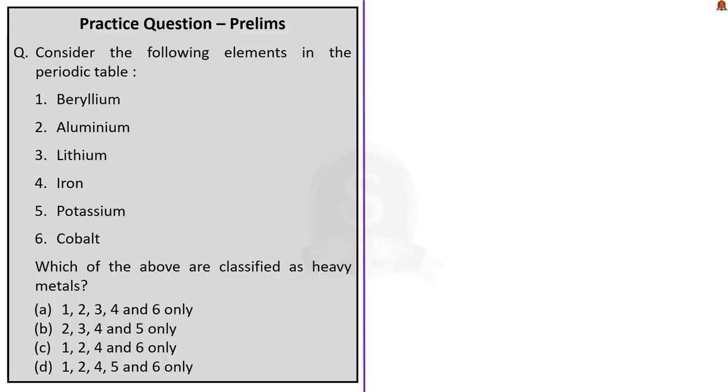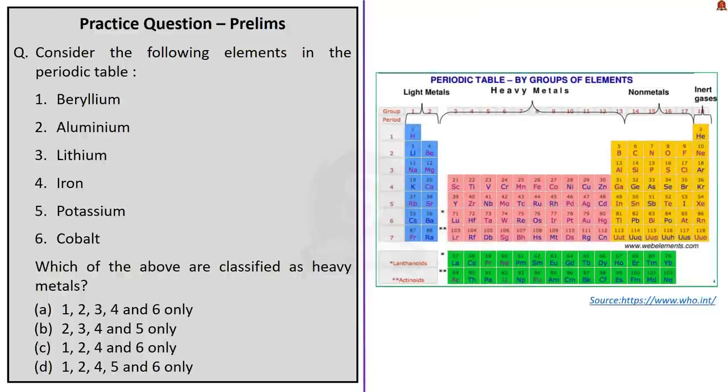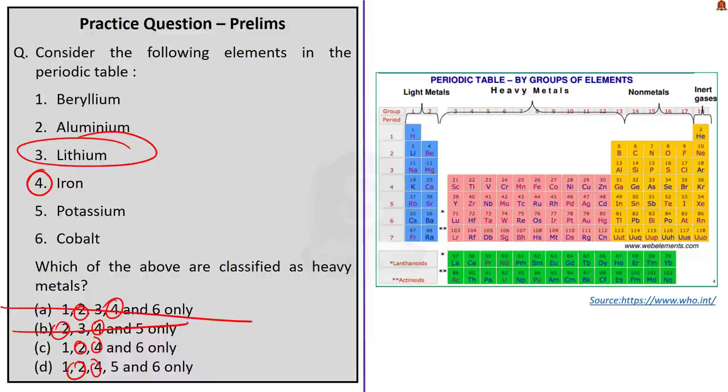This next question states consider the following elements in the periodic table: Beryllium, Aluminium, Lithium, Iron, Potassium, Cobalt. Which of the above are classified as heavy metals? This is a quite tricky question. If you see the options, 2 and 4 are given in all the options. That means Aluminium and Iron are definitely heavy metals. So we cannot apply elimination technique here. If you know the factual point you can arrive at correct answer because lithium is the lightest metal. If you know this fact itself you can eliminate options A and B. From the given options you have 50-50 probability attempting this question correct. Note that the correct answer is option C, 1, 2, 4 and 6 only. Potassium is not a heavy metal because it is also a least dense metal and you can see where these metals are in the periodic table.